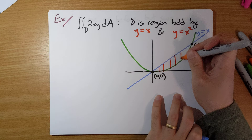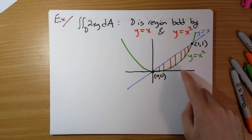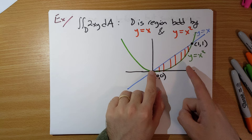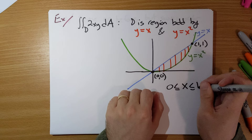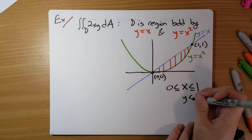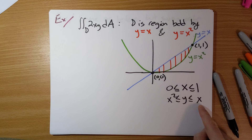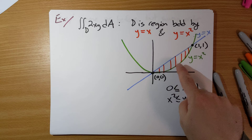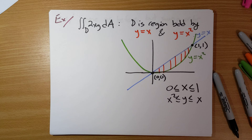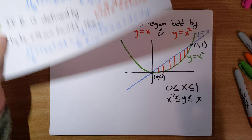We can express this region as x running from 0 to 1, and for a fixed value of x, y runs from x² to x. You might be tempted to say the lower bound is x and upper bound is x², but realize that when x is between 0 and 1, y = x is actually bigger than y = x².